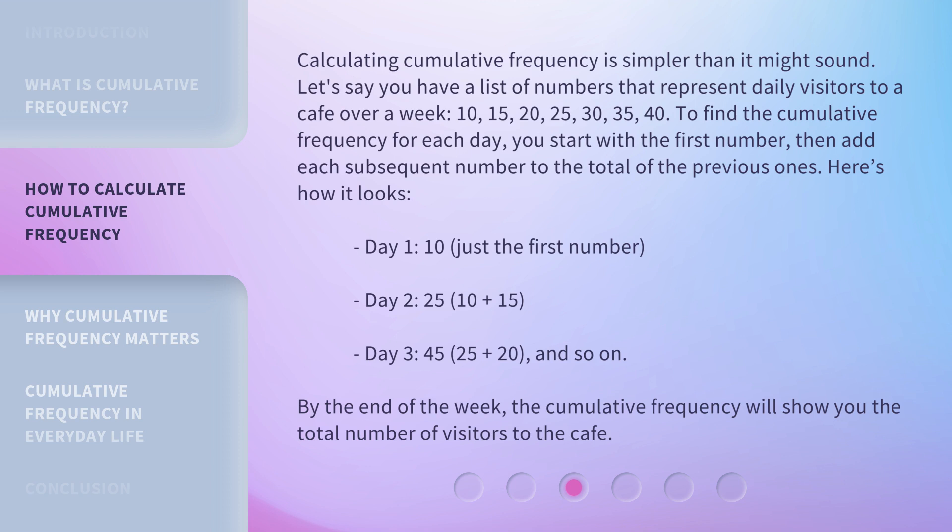Day 1: 10 (just the first number). Day 2: 25 (10 plus 15). Day 3: 45 (25 plus 20), and so on. By the end of the week, the cumulative frequency will show you the total number of visitors to the cafe.